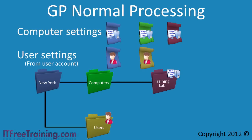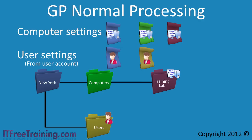Let us look at the typical group policy deployment to understand why you would need loopback processing. In this example, the computer account is located under the OU training lab, found under the computers OU located under New York. The user account is located under the users OU, also found under New York. When the computer starts up, the New York group policy and training lab OU's computer side group policy is processed. When a user logs in, the user side group policies are processed based on where the user account is located, so the New York and User OU user side group policies are applied.